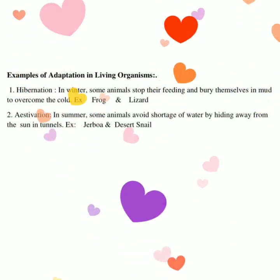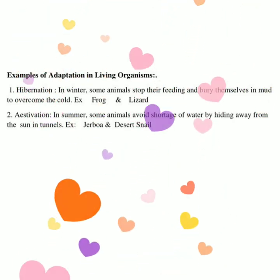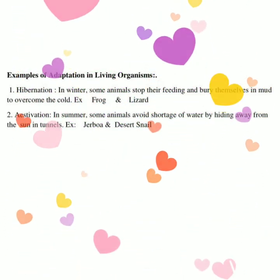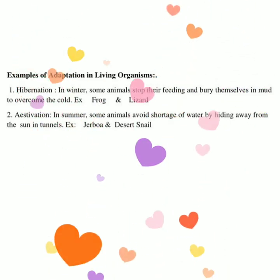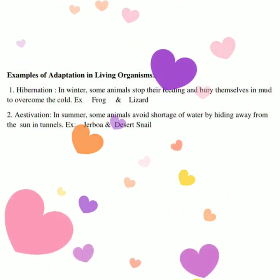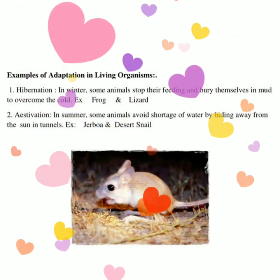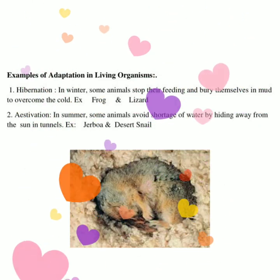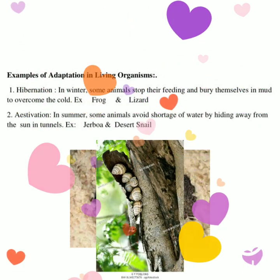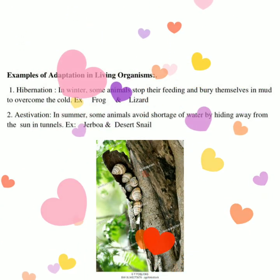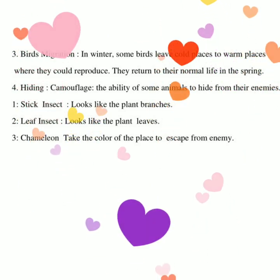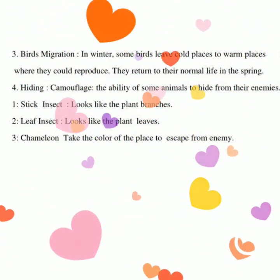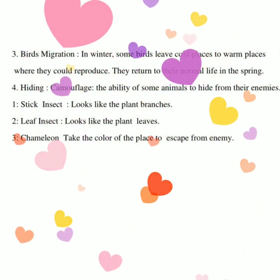Estivation: in summer, some animals avoid shortage of water and high temperature by hiding away from the sun in tunnels. Examples include the jerboa, lizard, and snail.